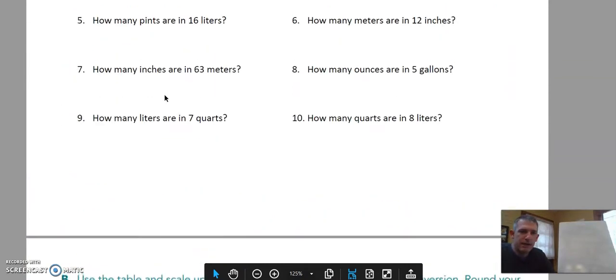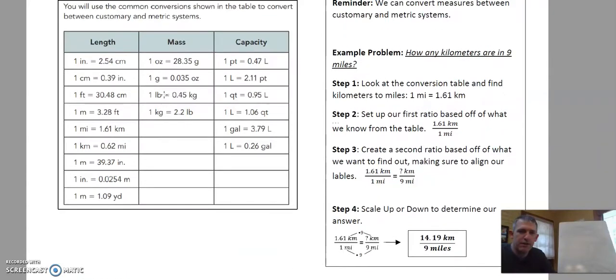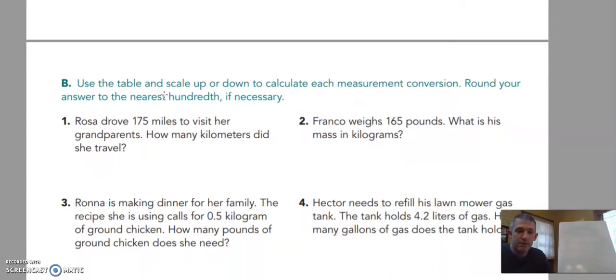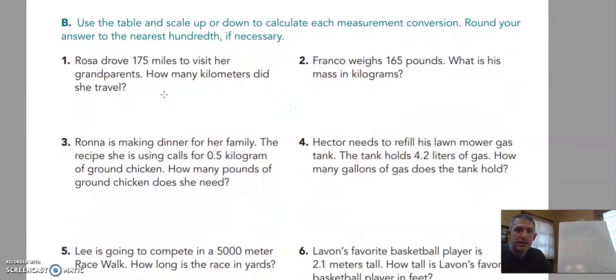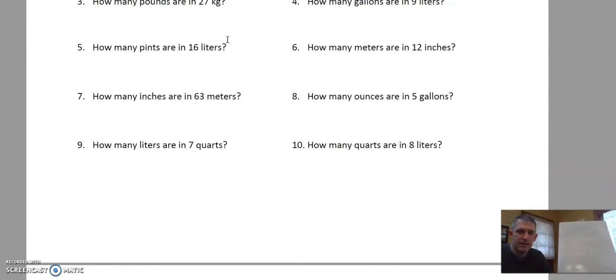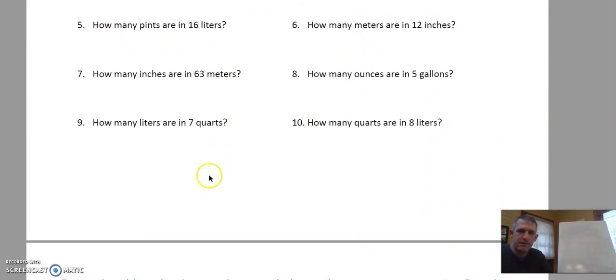The previous video we talked about using ratios to scale up and scale down to convert measurements. Basically going to be doing the same thing, except now the problems are more wordy, also known as word problems. We're just going to need to sift through the information to figure out what we need to do. It says use the table and scale up or down to calculate each measurement conversion. Round your answers to the nearest hundredth if necessary. The table they're talking about is this one right here. We're going to be scrolling back up to that, so keep that handy.